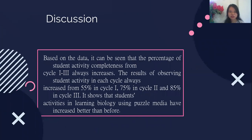The next topic: discussion. Based on the data, it can be seen that the percentage of student activity completeness from cycle one to three shows an increase. The result of observing student activity in each cycle increased from 55 percent in cycle one, 75 percent in cycle two, and 85 percent in cycle three. This shows that student activities in learning biology using puzzle media have increased better than before.